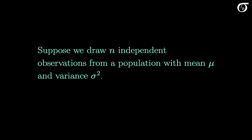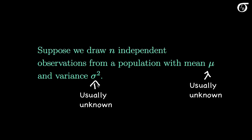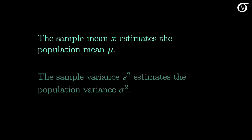Suppose we draw n independent observations from a population with mean mu and variance sigma squared. This is commonly the case when we are drawing a random sample. Mu and sigma squared are parameters, and their values are typically unknown. We often want to estimate them. The sample mean x-bar estimates the population mean mu, and the sample variance s squared estimates the population variance sigma squared.